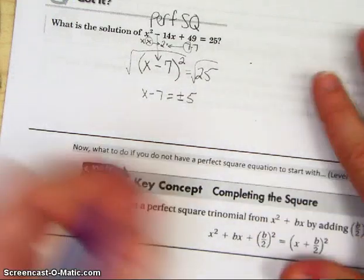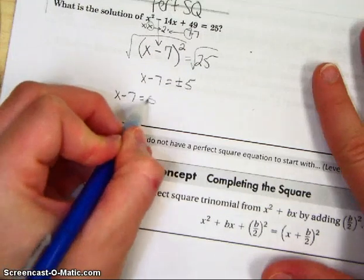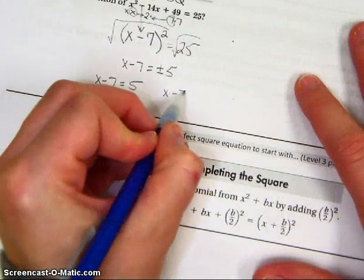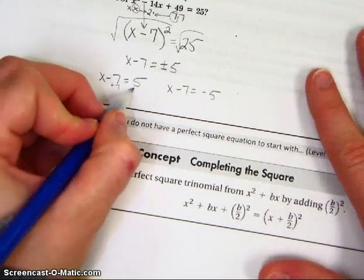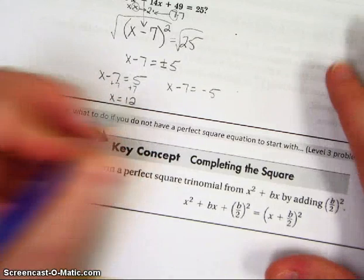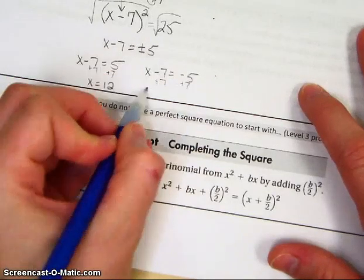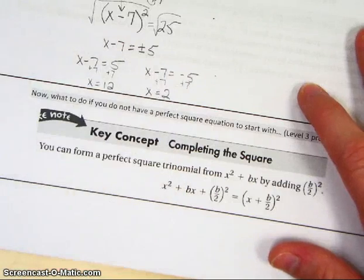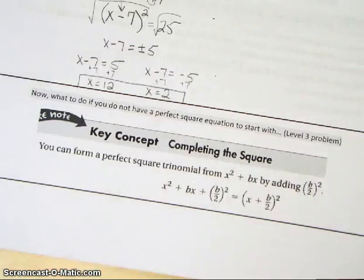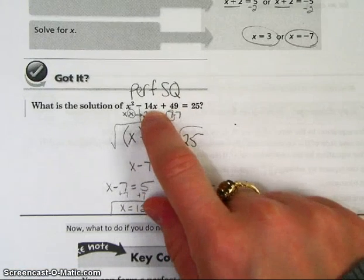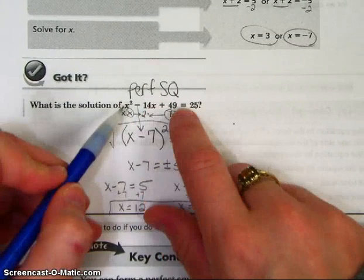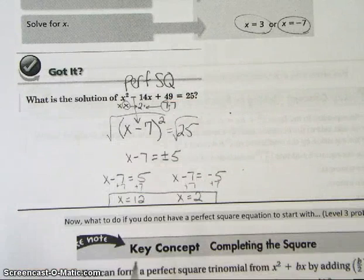Now, I have two problems. I have x - 7 equals a positive 5, and I have x - 7 equals a negative 5. Add 7 on this one, and I get x equals 12, and add 7 on this one, x equals 2. So let's make sure you understand this one is different from the front page, because we have an x term when we begin with. But this one is a level 2 problem, so not quite as difficult as what we're going to see, because it has a perfect square that can factor perfectly.